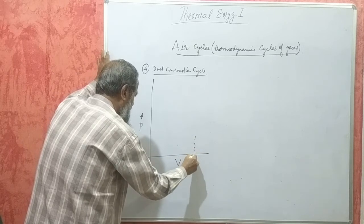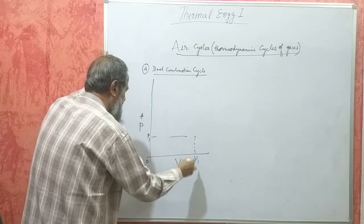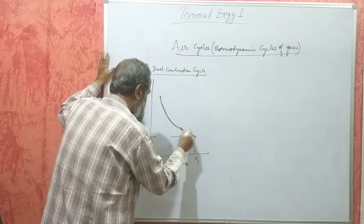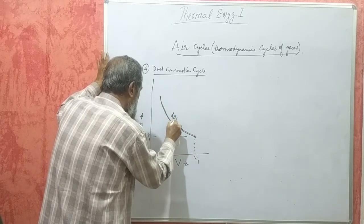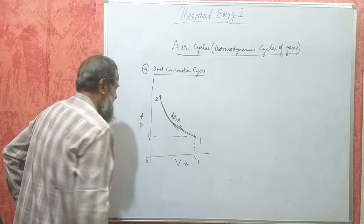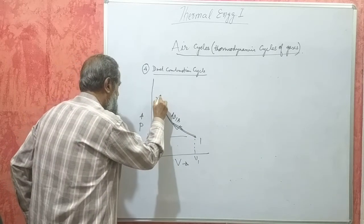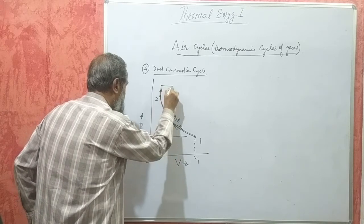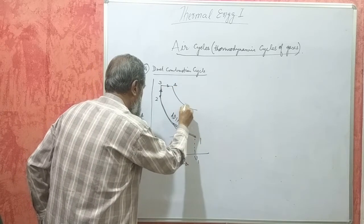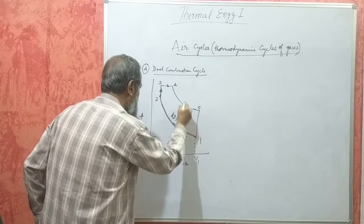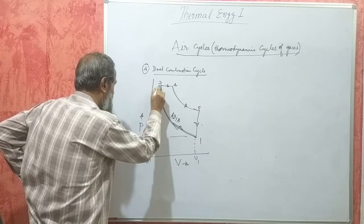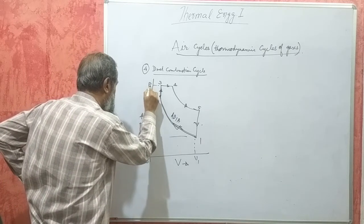The PV diagram for this cycle will be like this. Air is admitted into the cylinder at pressure P1 and volume V1, and compressed adiabatically. Then, combustion takes place partially at constant volume and partially at constant pressure. Then, adiabatic expansion takes place, followed by the exhaust process.